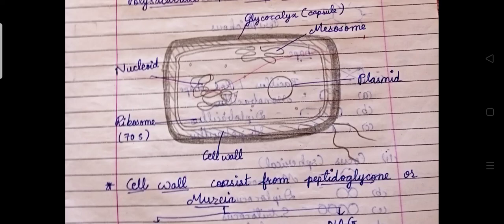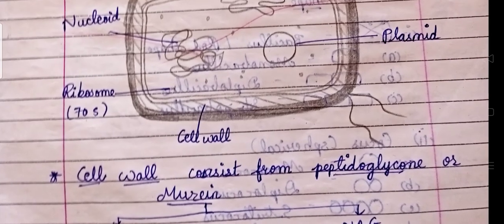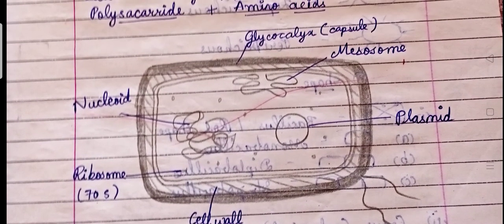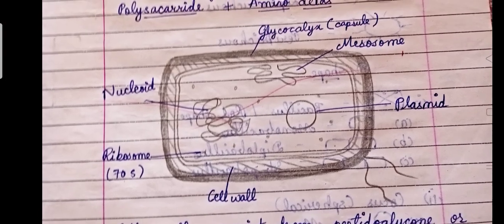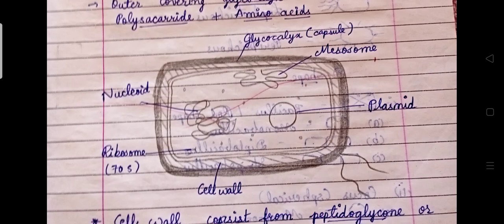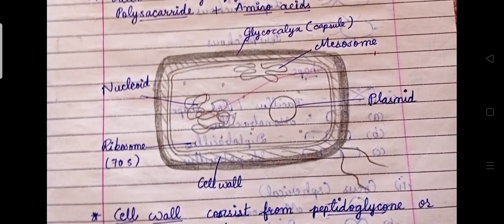Hello students, we are continuing with the structure of the bacterial cell. As you know, this cell is covered with three envelopes. The very first is the glycocalyx — it is a hard, tough layer, so we will call it the capsule. The second layer, as shown in the diagram with the arrow, is the cell wall, which is the second envelope. The third, innermost thin layer is the cell membrane, or plasma membrane.